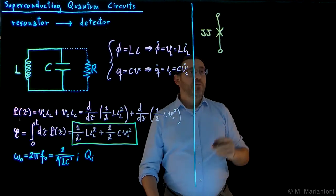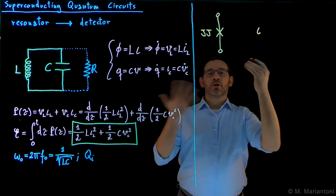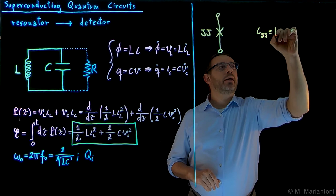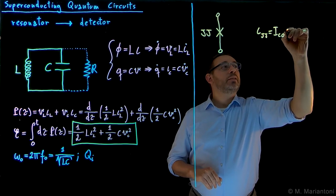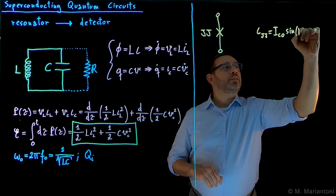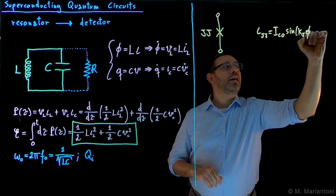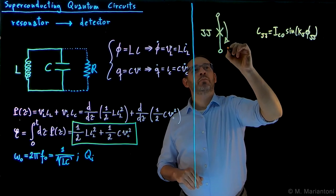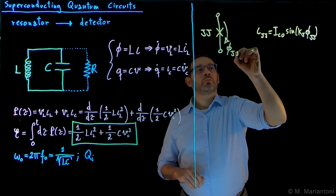In this case, we found that the current, that is the constitutive relation for the Josephson junction, is given by a critical current Ic0 times the sine of a constant kj times the flux phi_JJ across the junction.